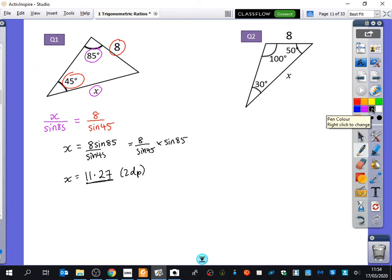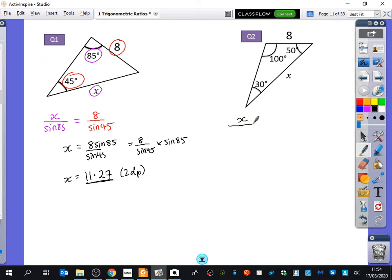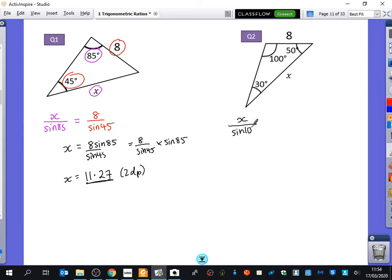So, this one here, you just need to be careful about using the right angles for this one. So, which one does x go with? 100. So, it's x goes with sine 100 because it's the opposite equals what? 8 over sine 30.